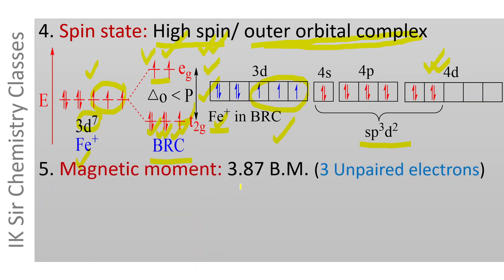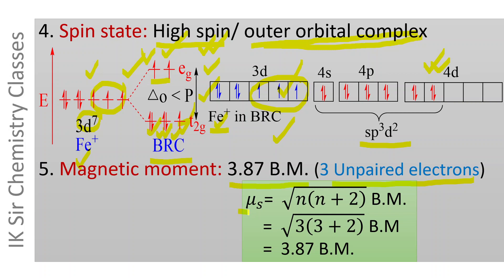The magnetic moment of the brown ring complex is 3.87 Bohr magnetons, corresponding to three unpaired electrons — consistent with both VBT and CFT. The spin-only magnetic moment is calculated as √(n(n+2)) BM, where n is the number of unpaired electrons. With n = 3, this gives √15 = 3.87 BM.